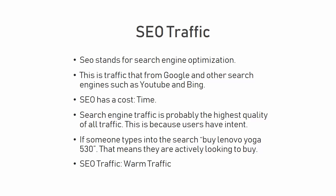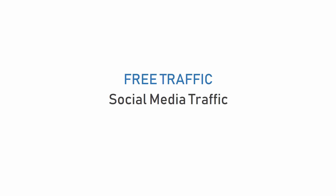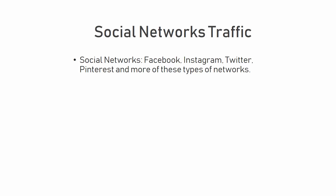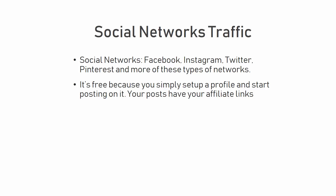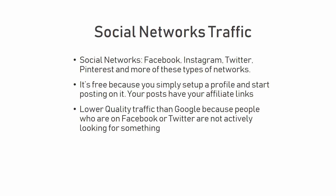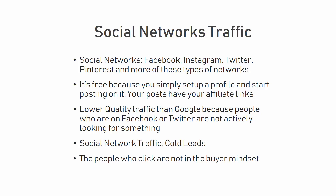Let's compare it to the next free traffic source, and this is social media traffic or social networks traffic. I am referring to Facebook, Instagram, Twitter, Pinterest and more. It's free because you simply set up a profile, let's say on Facebook, and then start posting on it. Your posts have links to your affiliate offers. If your posts get discovered, some people may like it, others may share it, and some may click on it and go to your offer. The quality of this traffic is much lower than on Google because people on Facebook or Twitter are not actively looking for something. There is a different mindset of a person actively searching on Google as opposed to someone browsing Facebook to see what their friends have been up to. So if you are advertising your offer on social networks, the clicks you get are colder traffic — the people who click are not in the buyer mindset and are not yet ready to buy. So you have to warm these leads up.